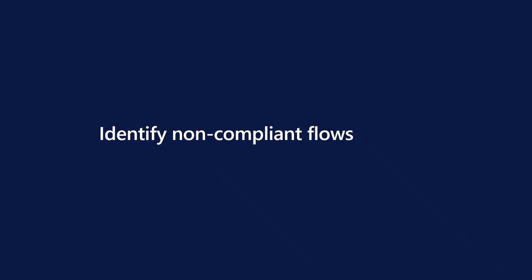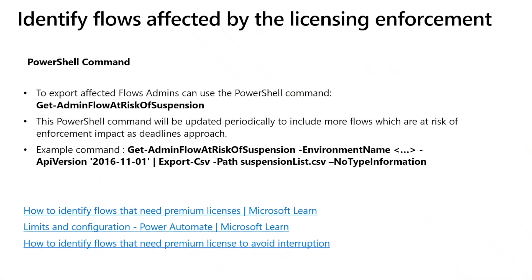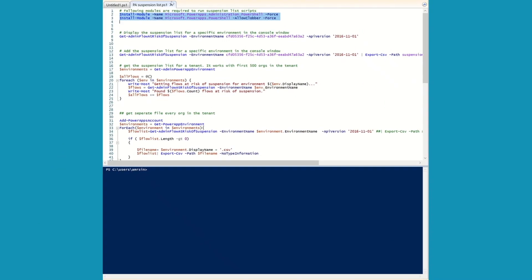To identify non-compliant flows, you can get a list in PPAC. Click on Licenses, select the environment, and from the dropdown select Power Automate as a product — then you can get a list of non-compliant flows. You also have an option to download this report. You can also retrieve the list using PowerShell, which is a much better way as you can automate this or retrieve the list for all environments in a tenant.